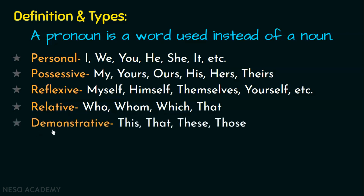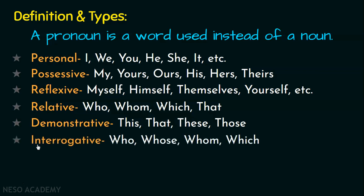The fifth type is demonstrative pronouns. Examples are this, that, these, and those. These words can be used to refer to or point out someone or something. The next type is interrogative pronouns, and the examples are who, whose, whom, and which. These are the words which can be used to ask questions in a sentence.